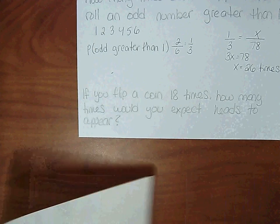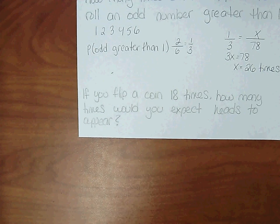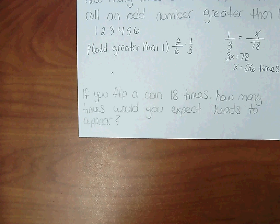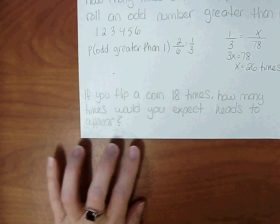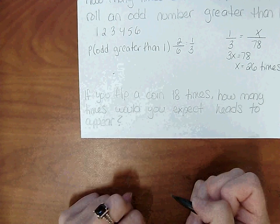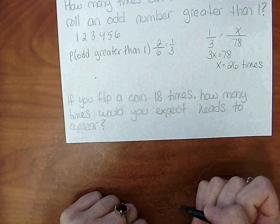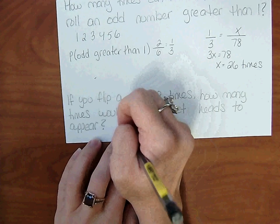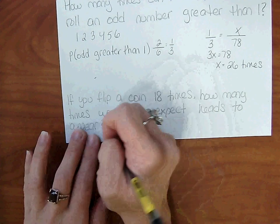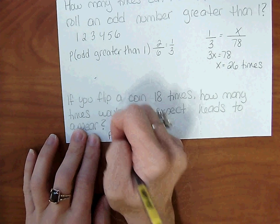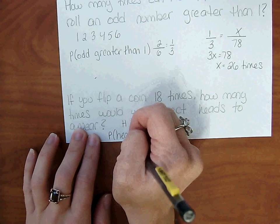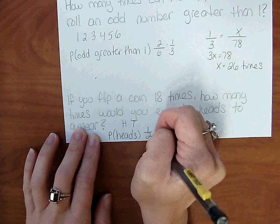If you flip a coin 18 times, how many times would you expect heads to appear? Well, this is going to be based on the theoretical probability. So sample space: heads and tails. So probability of getting heads is 1 out of 2, or half of the time.